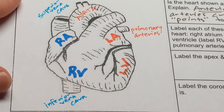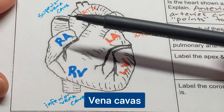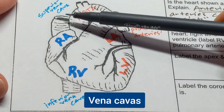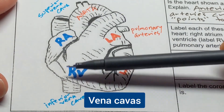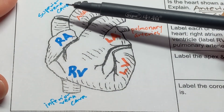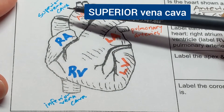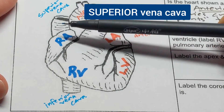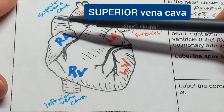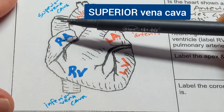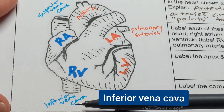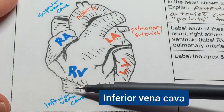I'm now labeling my vena cavas. There are two of them that come together. We have the superior vena cava, which is up above — remember that someone who is superior to you is above you. And we have the inferior vena cava because it's below.